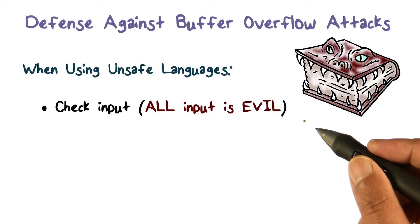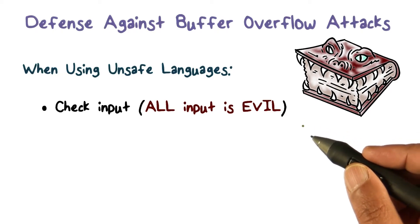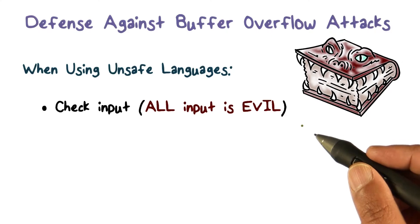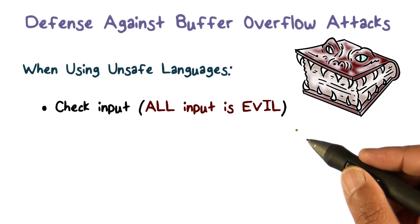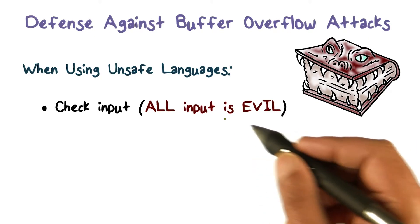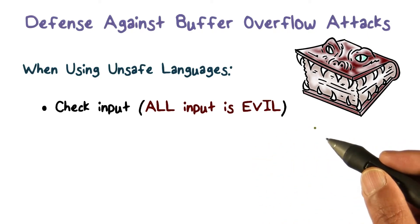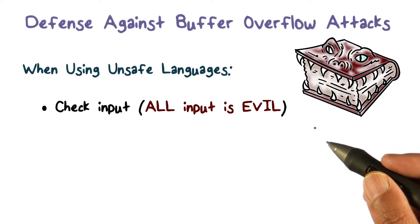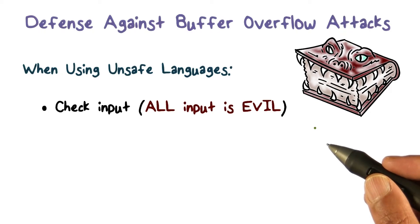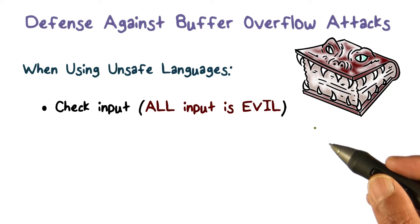Secure coding is extremely important. As you write programs, you write them to implement certain functionality. You may even write them with some performance goals in mind, but at the same time you need to keep in mind that you have to write them so they cannot be exploited. You have to code securely so your program doesn't have the vulnerabilities like the ones we've been talking about.